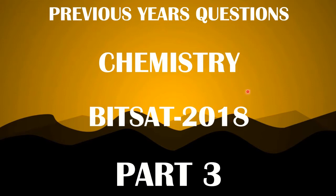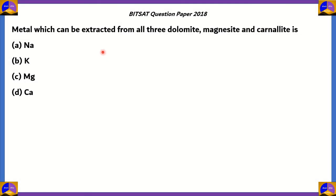Let's begin with the first question. The first question is: which metal can be extracted from all three of these ores — dolomite, magnesite, and carnalite? Is it A) sodium, B) potassium, C) magnesium, or D) calcium? Note that the question is asking from all three of these ores.